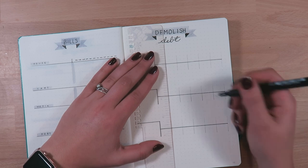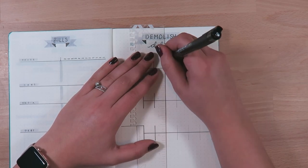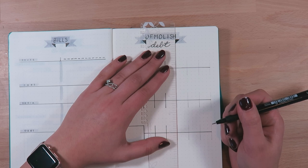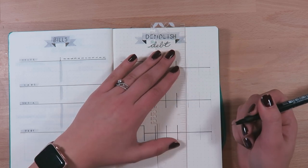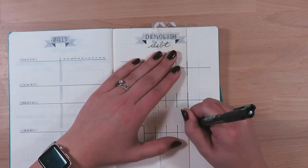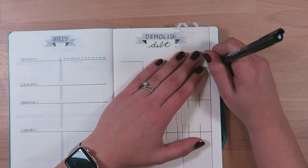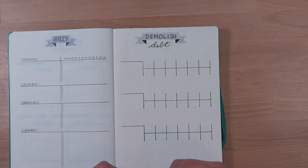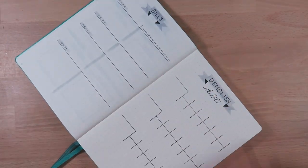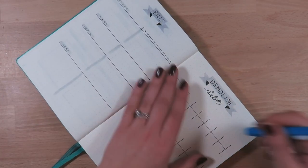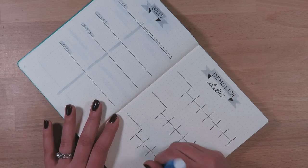And then for the debt side, each of these little boxes, so it's six months on top six months on the bottom, each box will show how much we paid on top and then the current balance on the bottom. And this has worked so well for us in demolishing our debt. So that is it for my 2019 bullet journal setup.